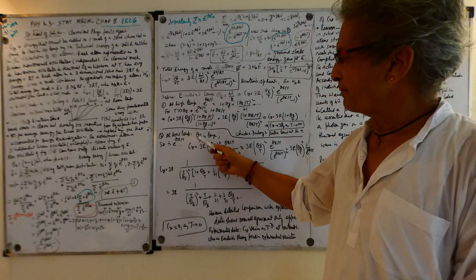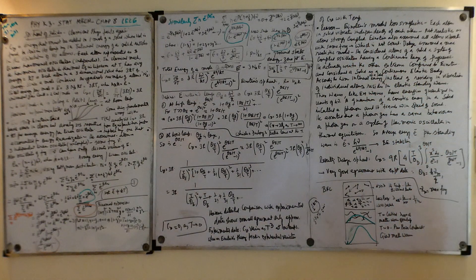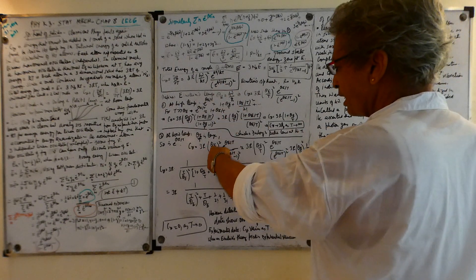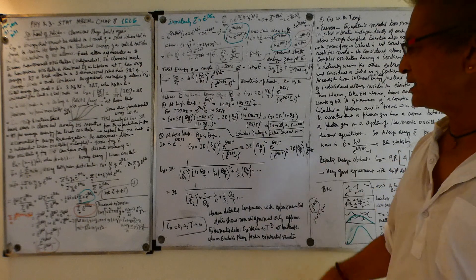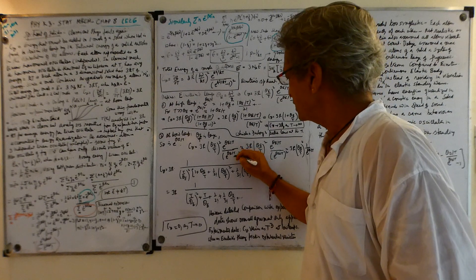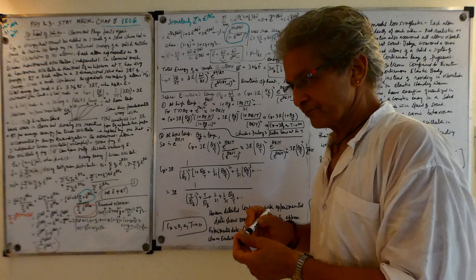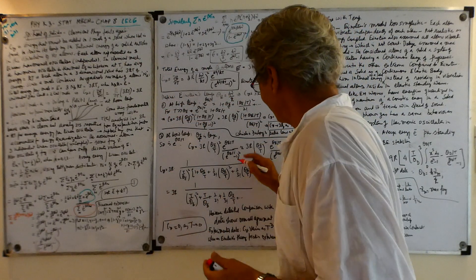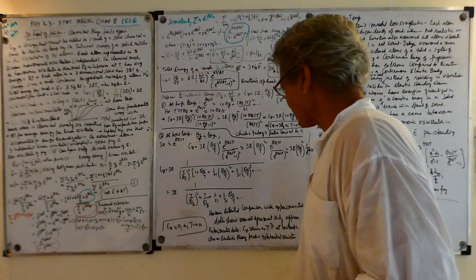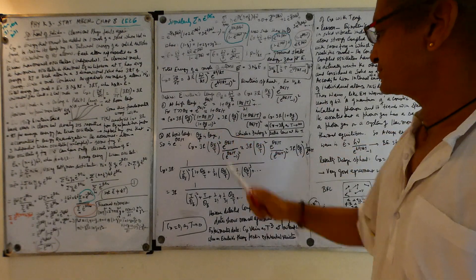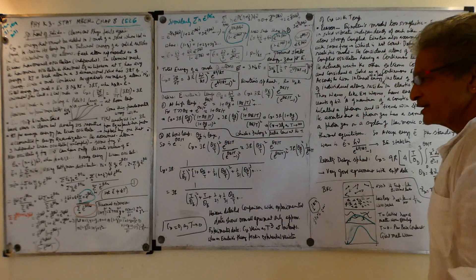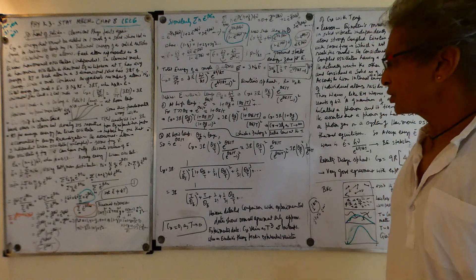At low temperature, T is small compared to θ_E, so θ_E/T is going to be a large quantity. My formula is: C_v = 3R × (θ_E/T)² × e^(θ_E/T) / (e^(θ_E/T) − 1)². Since θ_E/T is very large, e^(θ_E/T) is also going to be very large — that's the key approximation here.